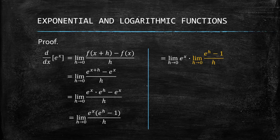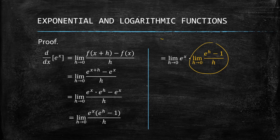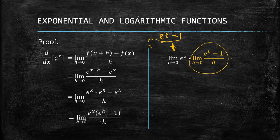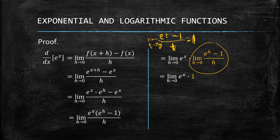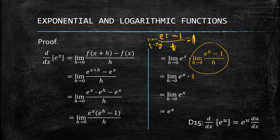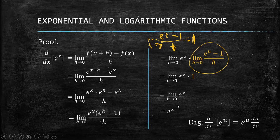We apply the limit property: the limit of (e^t − 1)/t as t approaches 0 equals 1. Using this, the remaining limit evaluates to 1, so we get e^x times 1, which is e^x. Generalizing, the derivative of e^u equals e^u times du/dx.